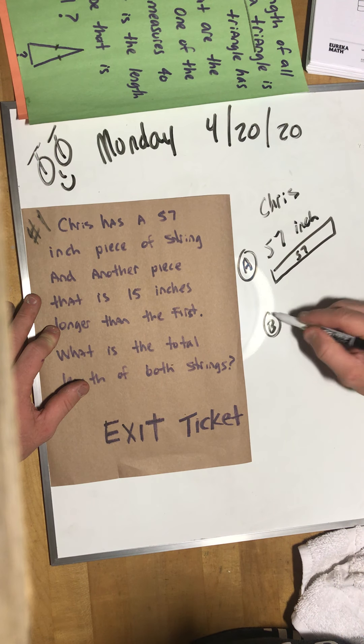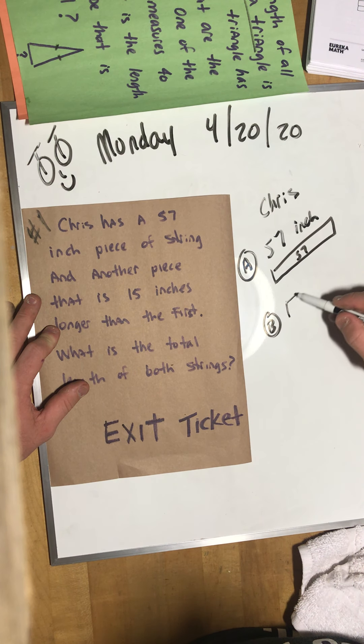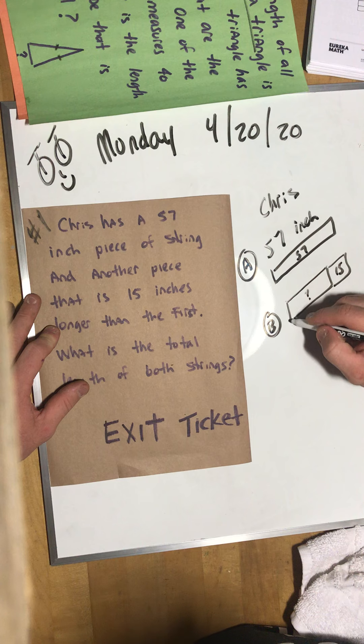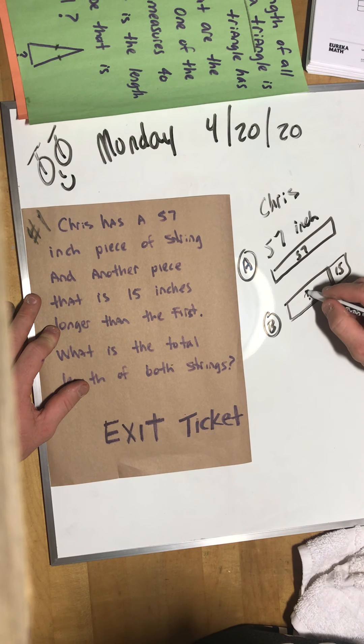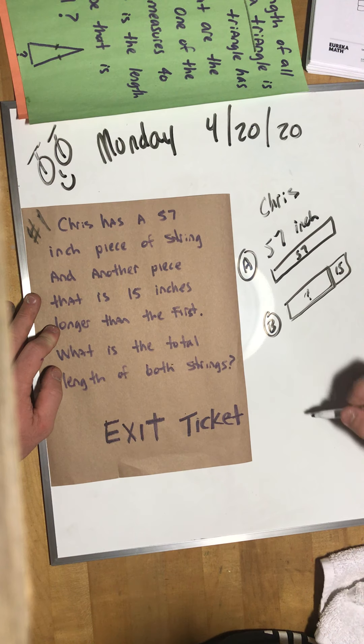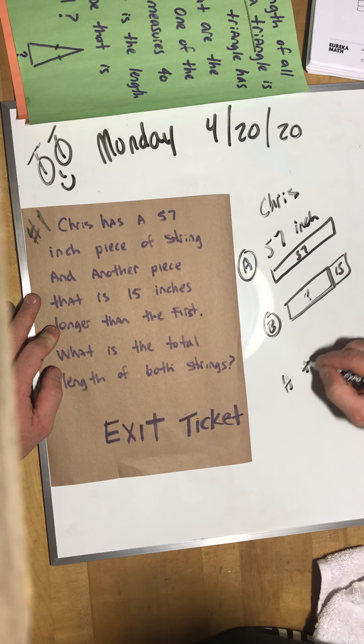Tape B is the one we don't know yet. We know that it's 15 inches shorter so we need to know what is this number. Once you figure that out, what is the total length of A plus B? Box it, call it a day.